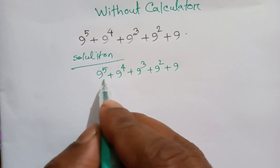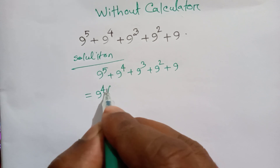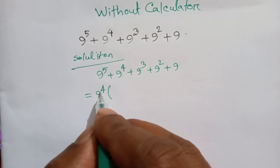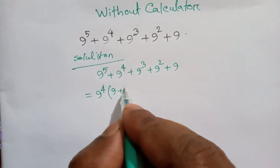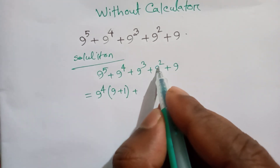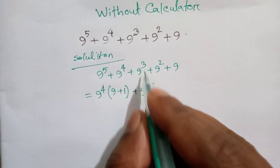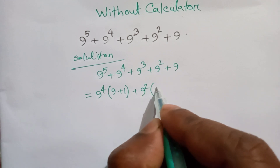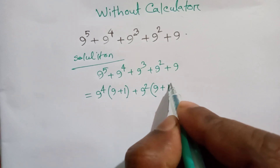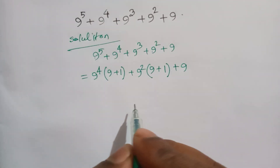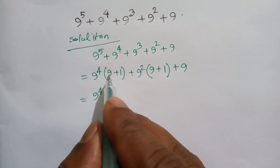First, we can take out 9 to the power 4 as a common factor. Inside the bracket: 9 to the power 5 divided by 9 to the power 4 is 9, plus 1, plus next we take 9 squared as common for the remaining terms — 9 cubed divided by 9 squared is 9, plus 9 squared divided by 9 squared is 1, plus this 9.